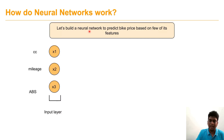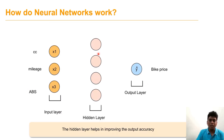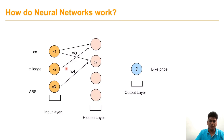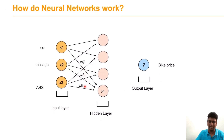Now we predict the price of a bike based on features: cc, mileage, and area of the bike. The input layers are x1, x2, and x3. A hidden layer sits between the input and output layers to improve overall accuracy. The first step is to compute x1·w1 + x2·w2 plus the bias, then find the activation function of that value. Similarly, weights w3, w4, w5, w6, w7, w8, w9 are assigned and calculated.